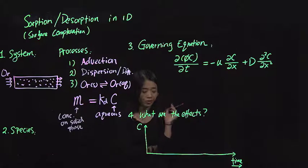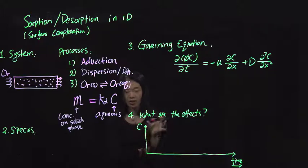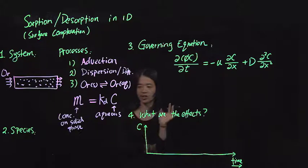How much is sorbed on the solid phase. And it could be in the units of, for example, mass of this chemical species per mass of solid phase, or per volume of solid phase. There are different units for that.